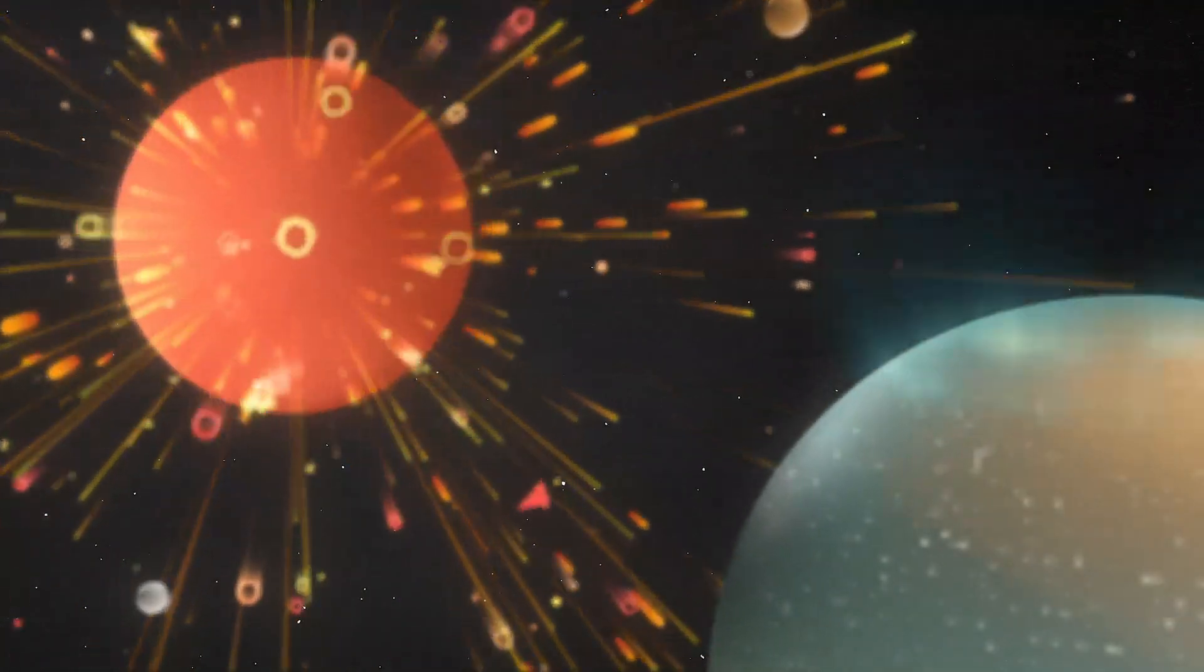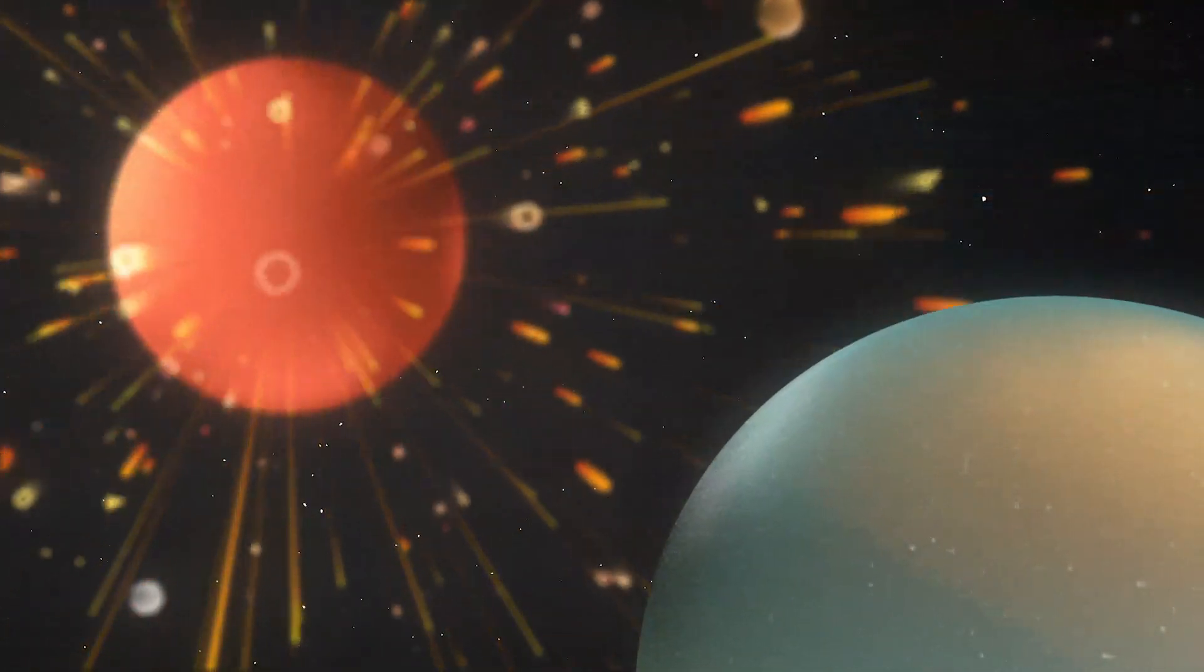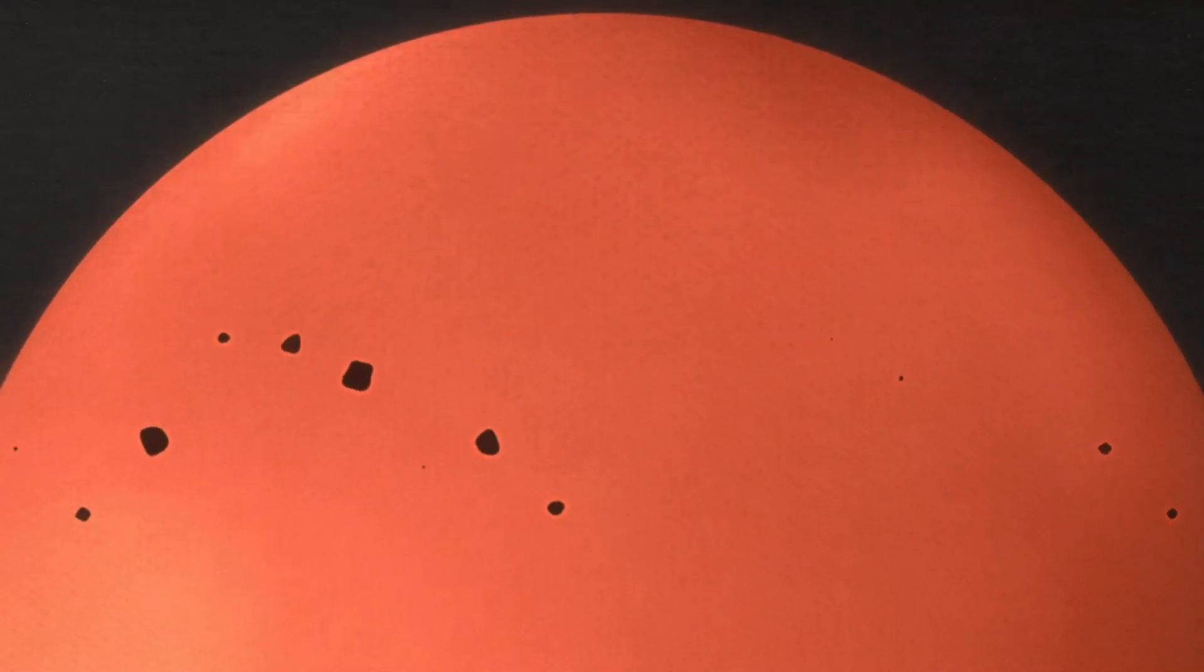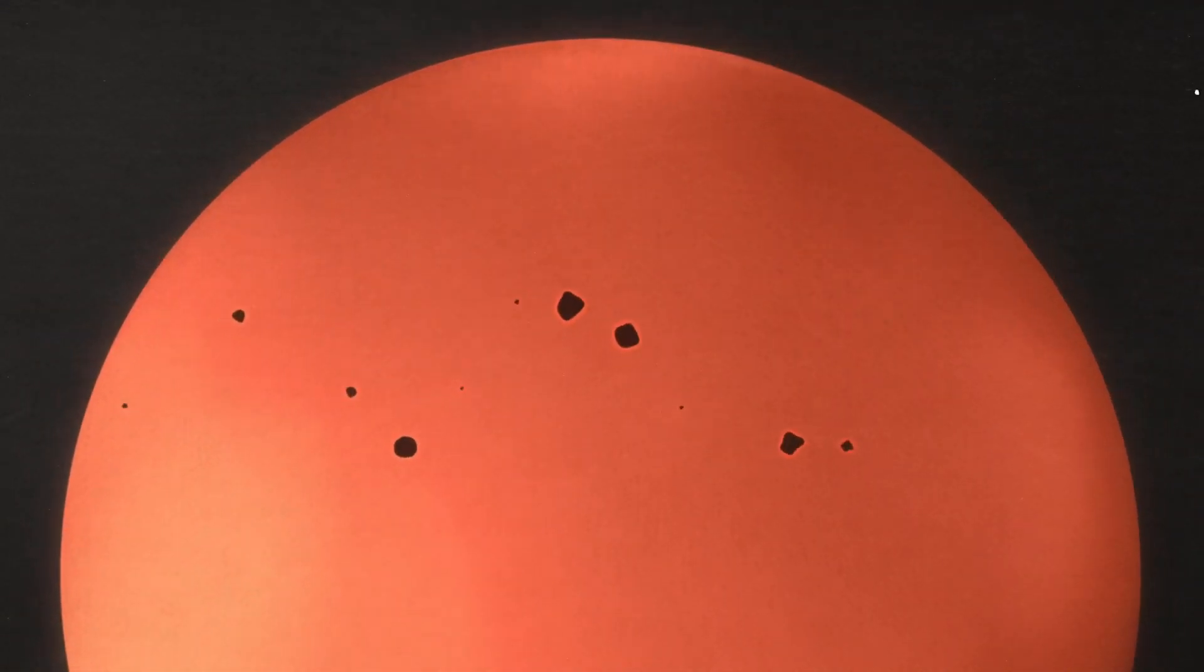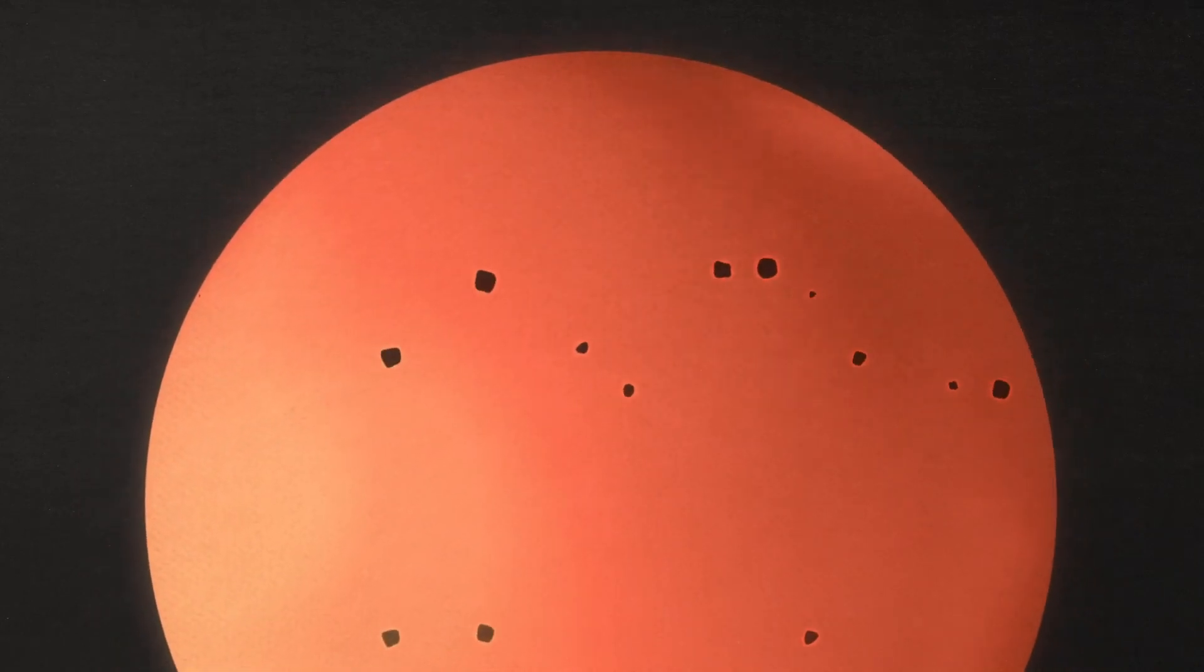Some create aurora and some can affect power grids on Earth. But sunspot number isn't the only indicator we see. These numbers are often combined with other signs.